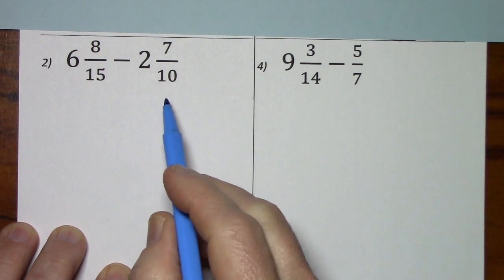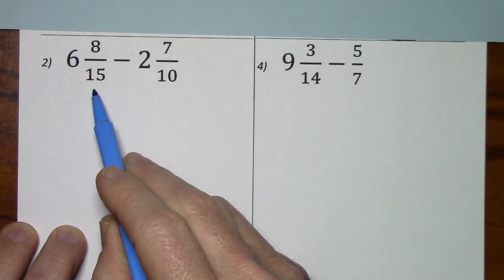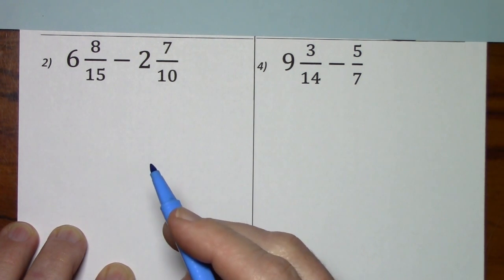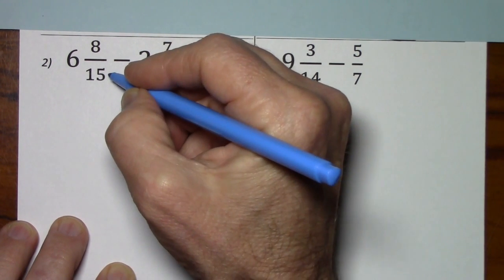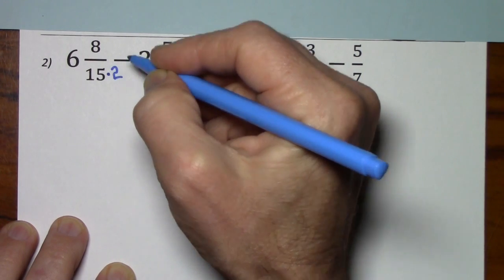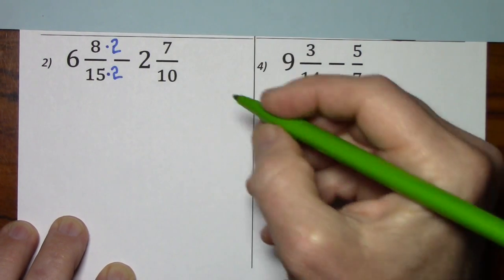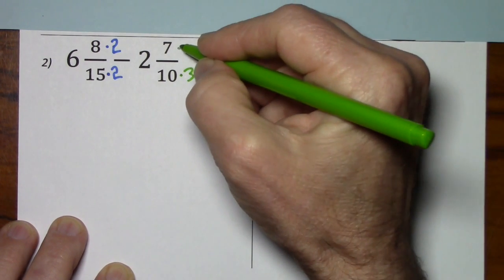Looking at this problem, we'll need common denominators. Multiples of 15 are 15, then 30. 10 goes into 30, so 30 is our least common denominator. To get to 30, you multiply by 2, so you do the same to the numerator. To get to 30, multiply by 3, do the same to the numerator.